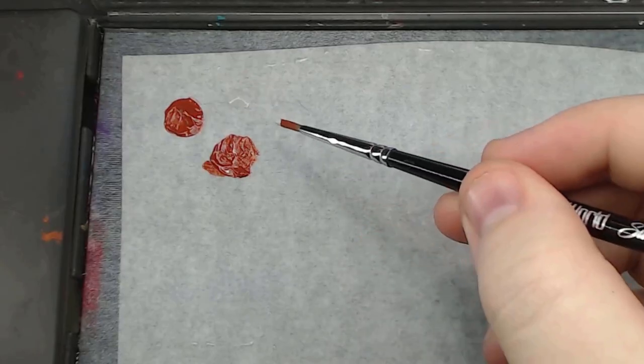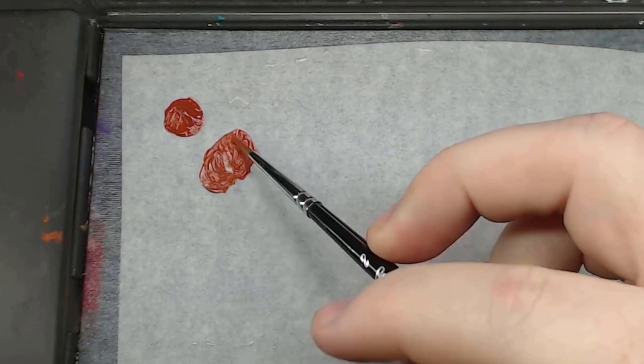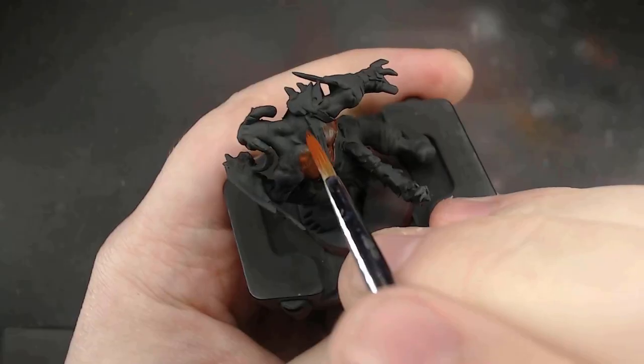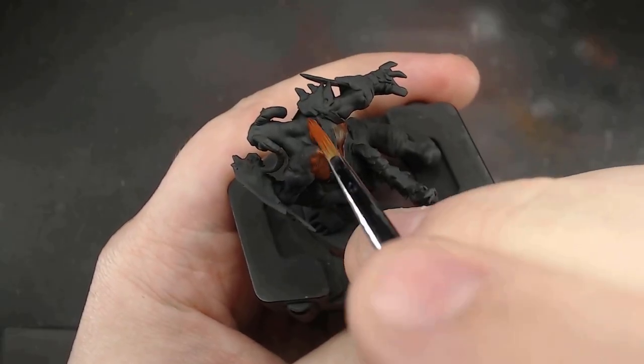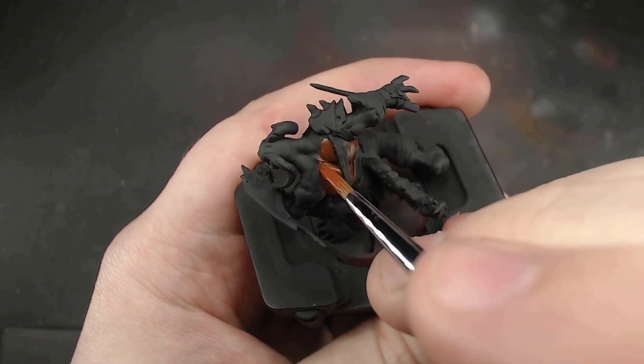Even dark reds like this burnt sienna aren't the most opaque of paints sometimes. So I'm going to do an opacity layer first by adding a bit of grey primer to the sienna, and start with that. It'll desaturate the color a bit, but that's alright because step two will bring a lot of that color back.